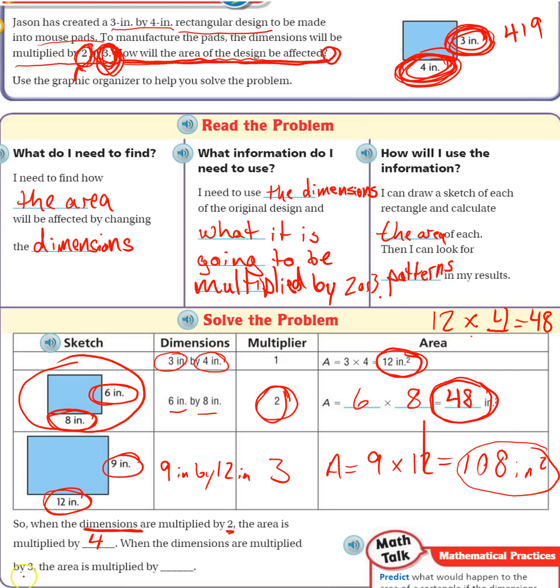When the dimensions are multiplied by 3, so here we multiply the length and the width by 3. And what happened to the area? Well, it started out as 12 originally. 12 times what gives me 108. Well, yeah, you can see that right here. 12 times 9. So the area is multiplied by 9. 12 times 9.